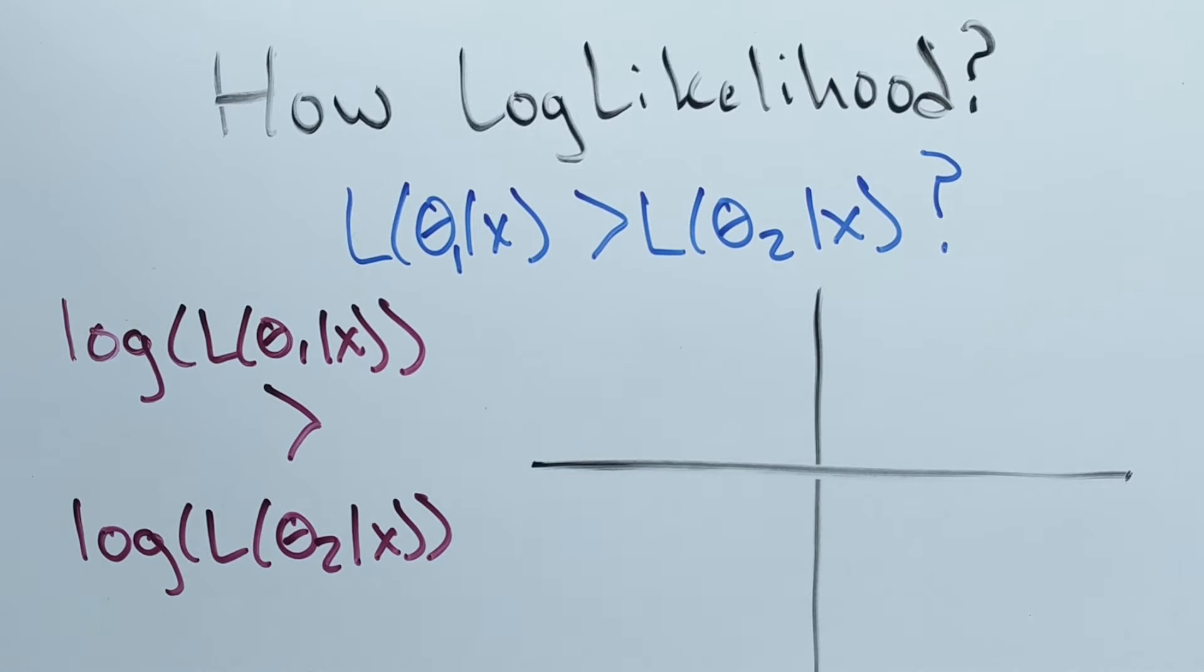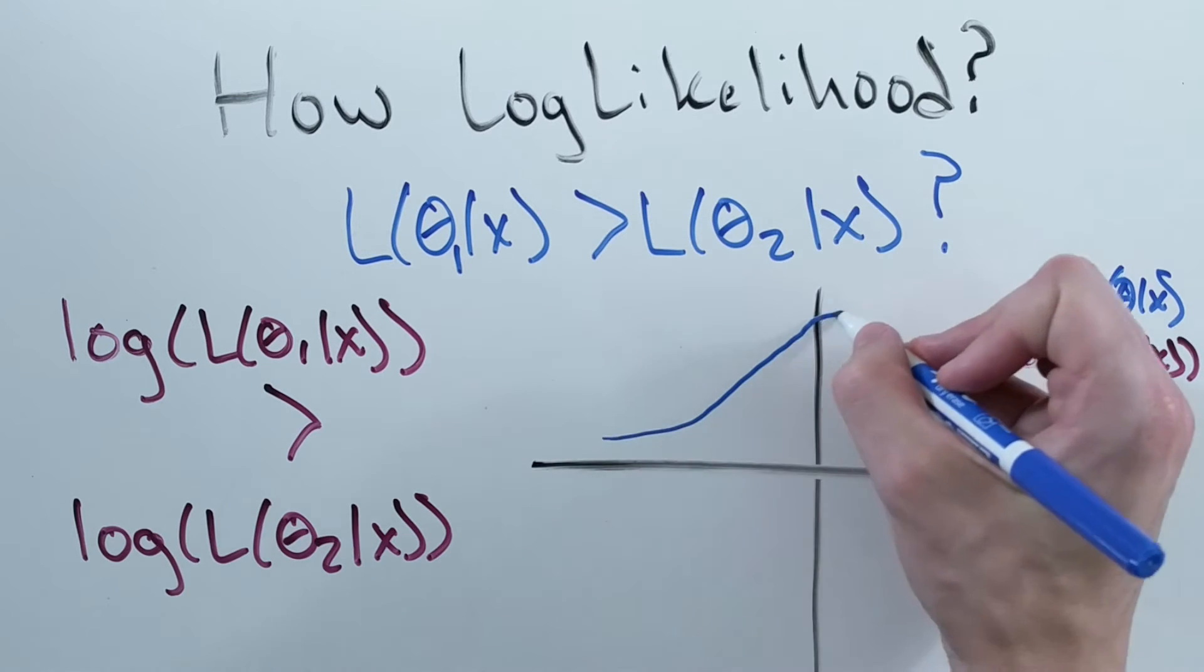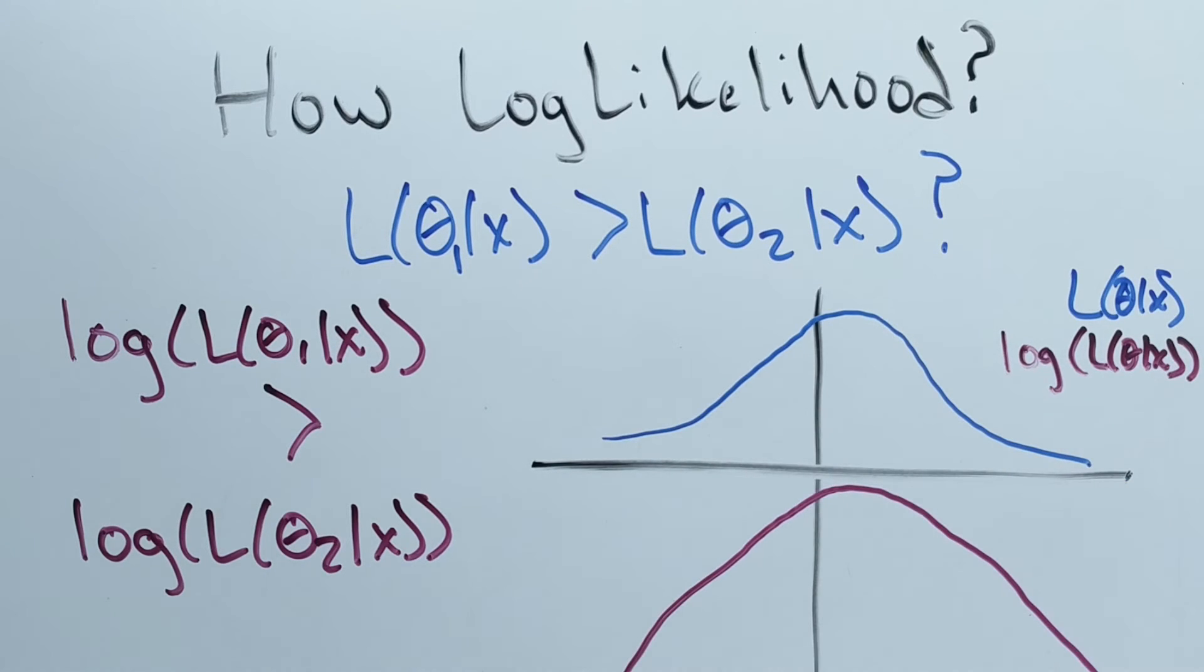If we plot a graph of likelihood versus log likelihood, we can see that as the likelihood increases, the log likelihood will always increase as well. Therefore, we can see that anytime we are comparing two likelihoods to see which is greater, we can instead compute the log likelihoods to see which is greater.